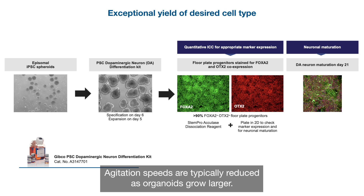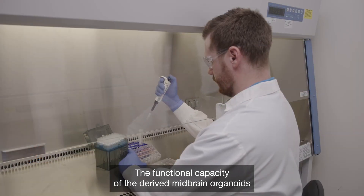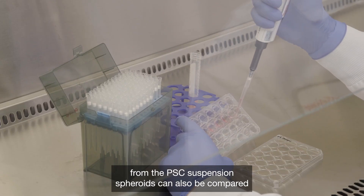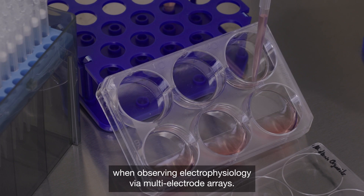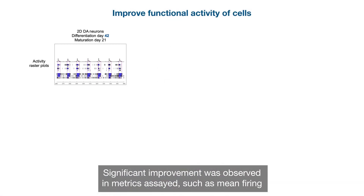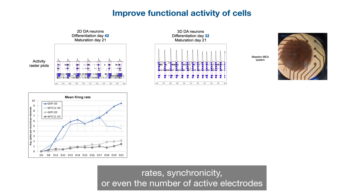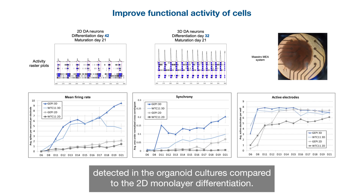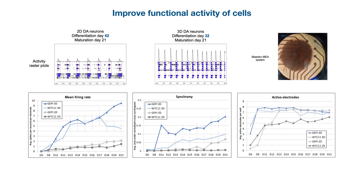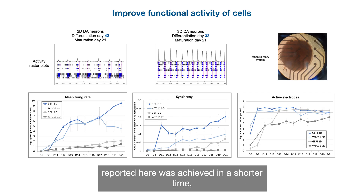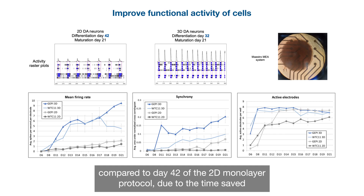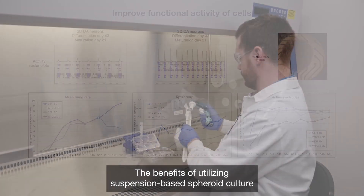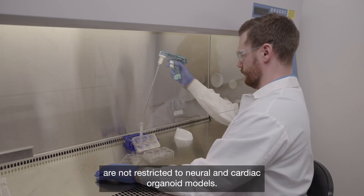We often see changing morphologies accompanying differentiations and will assess and adjust agitation speeds to balance sufficient mixing without inducing visible damage to organoids through excessive shear. Agitation speeds are typically reduced as organoids grow larger. The functional capacity of the derived midbrain organoids from PSC suspension spheroids can also be compared to that of dopaminergic neurons generated by the traditional 2D approach when observing electrophysiology via multi-electrode arrays. Significant improvement was observed in metrics such as mean firing rates, synchronicity, and the number of active electrodes detected in the organoid cultures compared to the 2D monolayer differentiation. Importantly, this improved electrophysiological phenotype was achieved in a shorter time — day 32 of the spheroid differentiation protocol compared to day 42 of the 2D monolayer protocol, due to the time saved during initial specification and expansion.